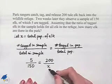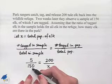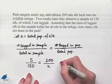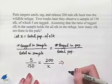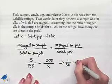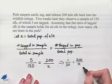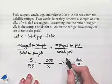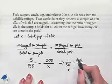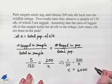Before we use our cross products principle, we notice that we can simplify the fraction on the left. We have a common factor of five, so we reduce 5/150 to get 1/30, giving us 1 over 30 equals 200 divided by X. Using our cross products principle, we multiply 1 times X, which is X, and 30 times 200, which gives us 6,000.